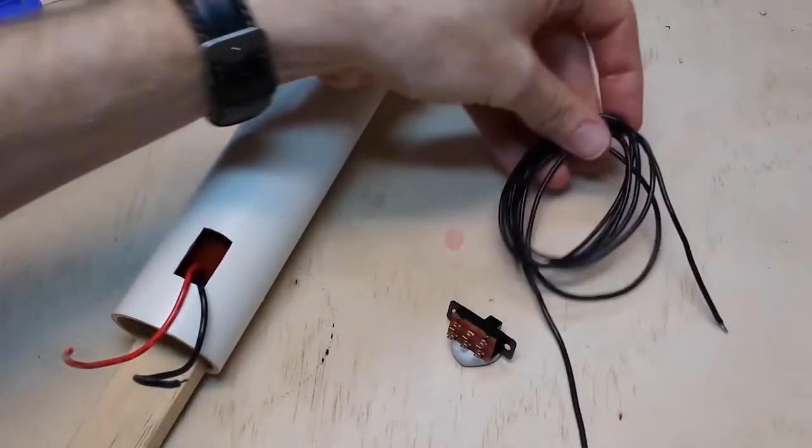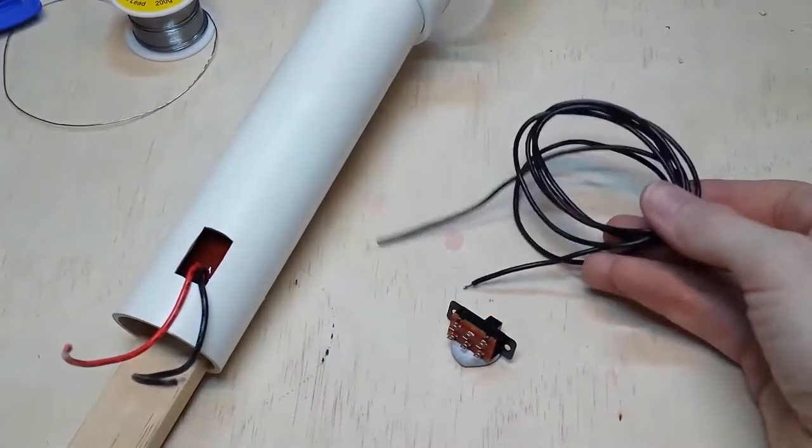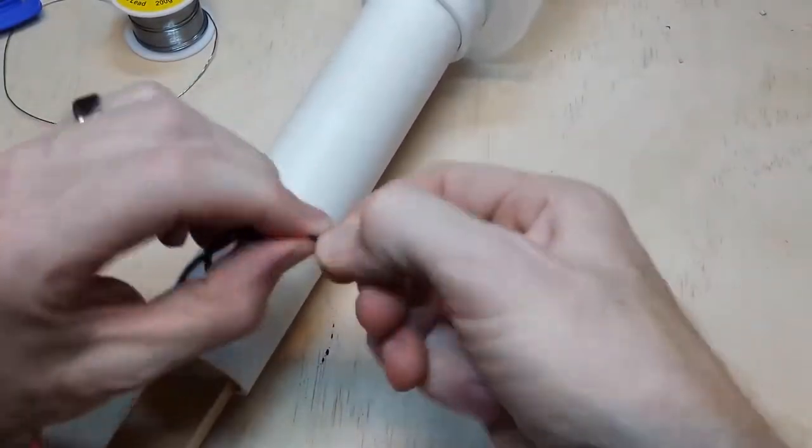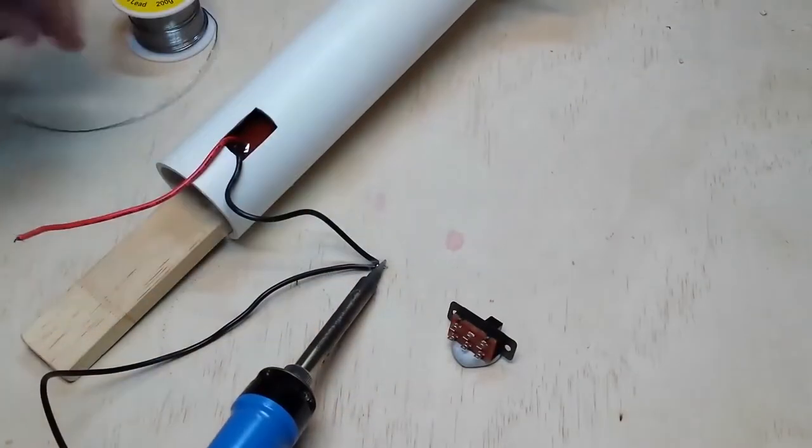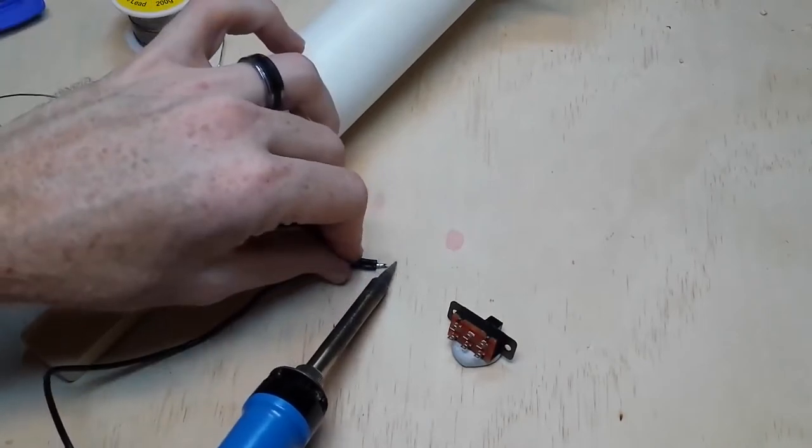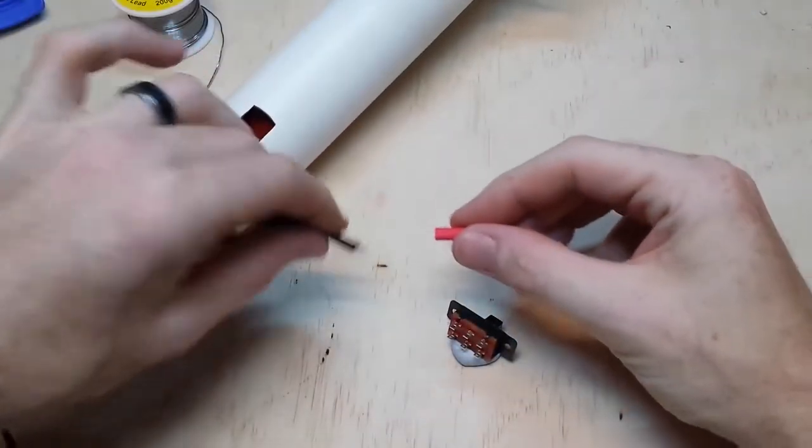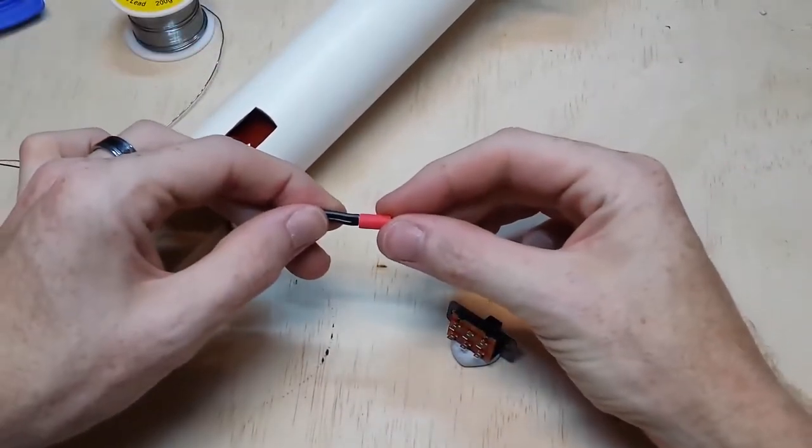Next, I solder a plug onto the red wire and use shrink tube to help seal the rear of the plug. This stops small grass fibers from getting in behind the plug.